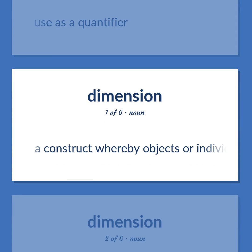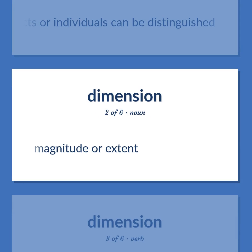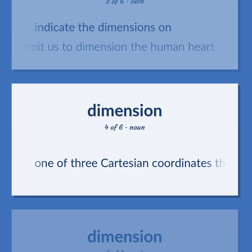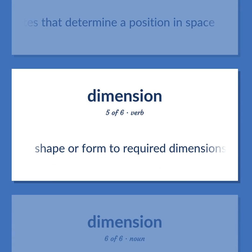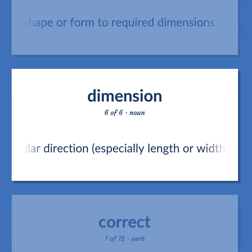DIMENSION: A construct whereby objects or individuals can be distinguished. Magnitude or extent. Indicate the dimensions on — these techniques permit us to dimension the human heart. One of three Cartesian coordinates that determine a position in space. Shape or form to require dimensions. The magnitude of something in a particular direction, especially length or width or height.